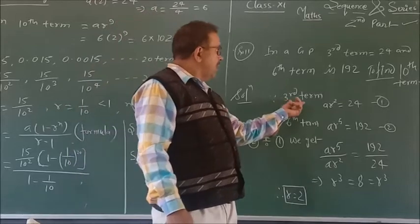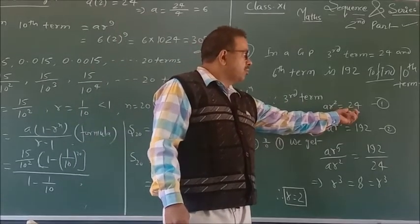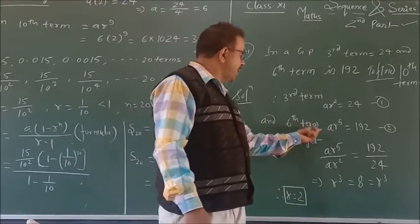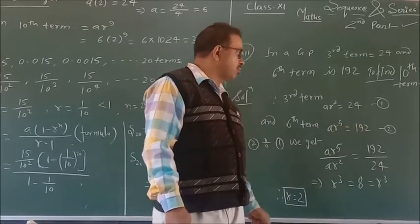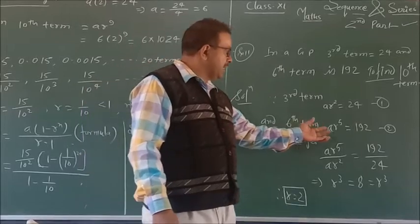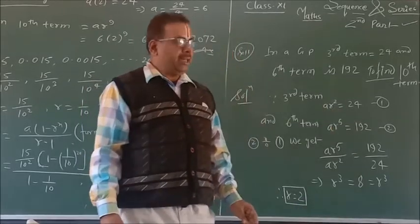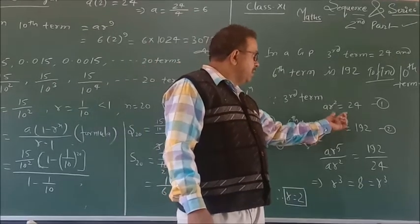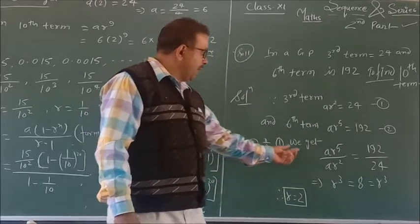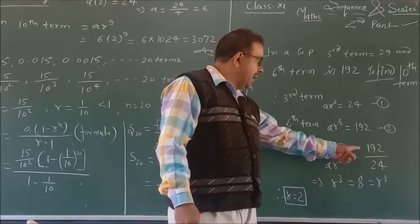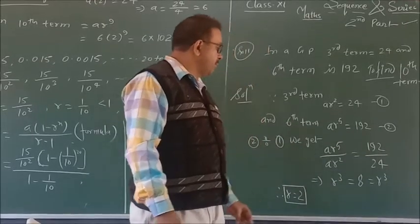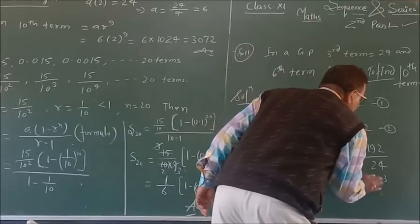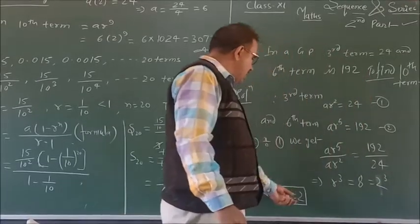The third term means ar² = 24 — this is the first equation. And the sixth term means ar⁵ = 192 — this is the second equation. Dividing the second by the first, we get ar⁵ / ar² = 192 / 24, so r³ = 8 = 2³. Therefore, the value of r is 2.